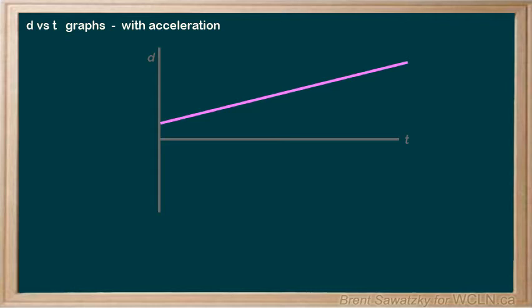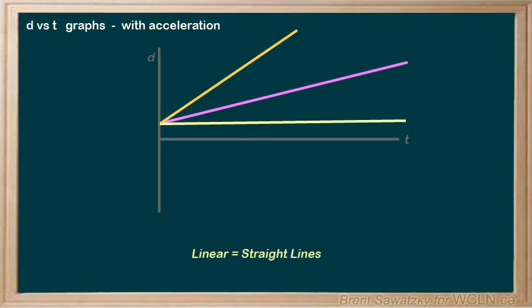So, it doesn't matter if it's this slope, or the zero slope from the previous example, or even a steeper slope. If it's linear, that is, the slope doesn't change, then there is no acceleration.